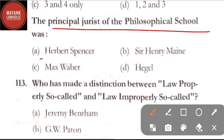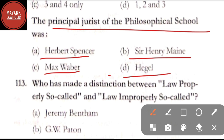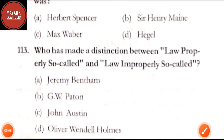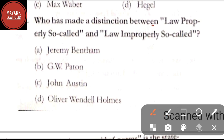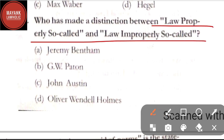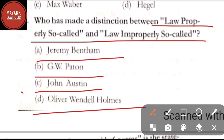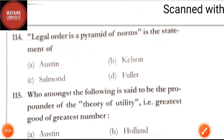Question number 112: the principal jurist of the philosophical school was — option A: Herbert Spencer; option B: Sir Henry Maine; option C: Max Weber; option D: Hegel. The correct answer is option D, Hegel. Question number 113: who has made a distinction between 'law properly so called' and 'law improperly so called' — option A: Jeremy Bentham; option B: GW Patten; option C: John Austin; option D: Oliver Wendell Holmes. The correct answer is option C, John Austin.